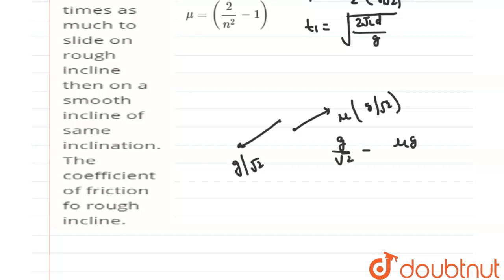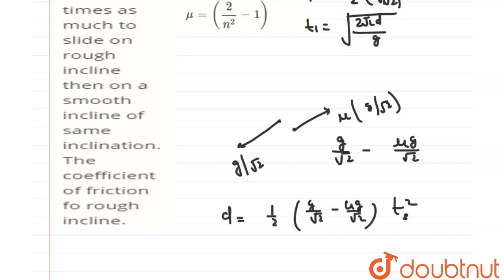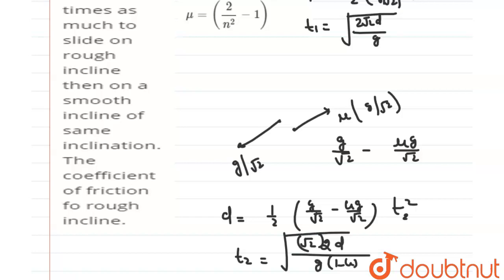Net acceleration becomes g/√2 − μg/√2. The block also travels the same distance d. So d = ½ · (g/√2 − μg/√2) · t2². Therefore t2 = √(2√2·d / (g·(1−μ))).